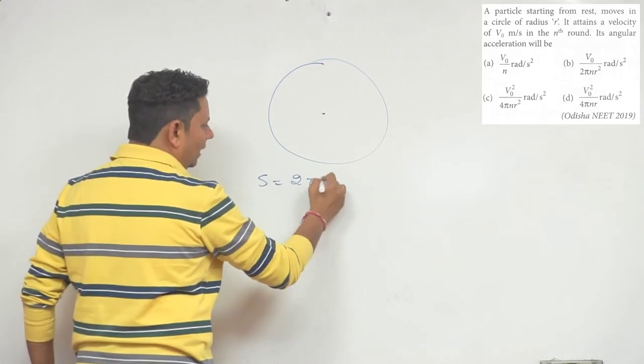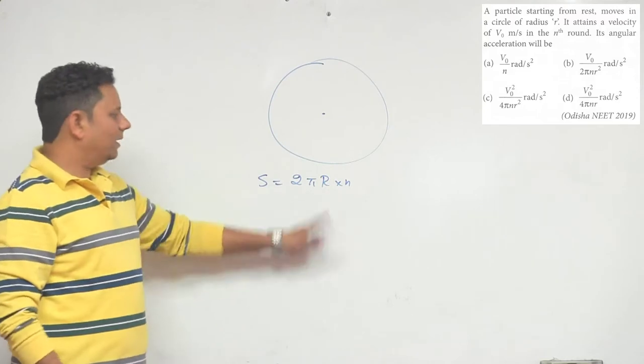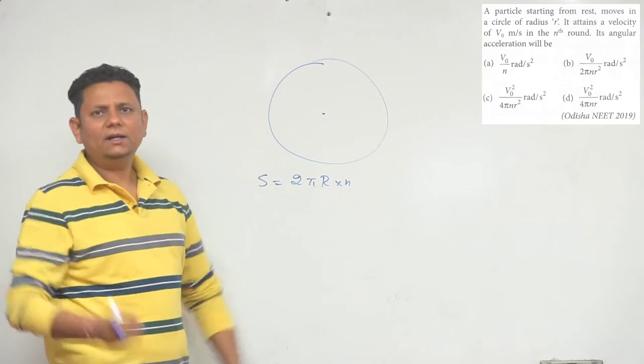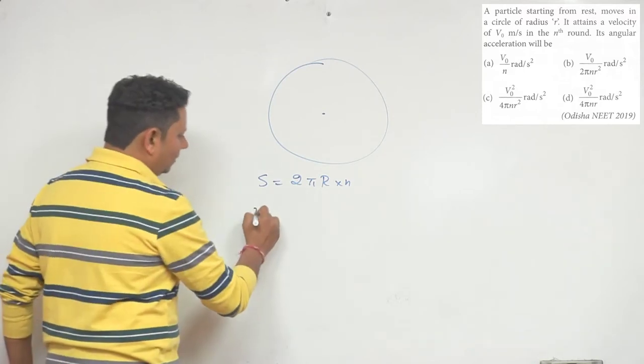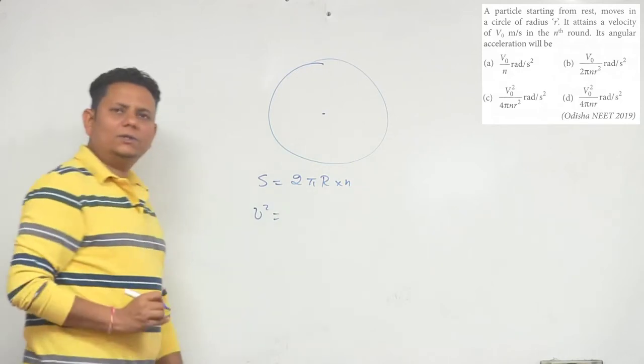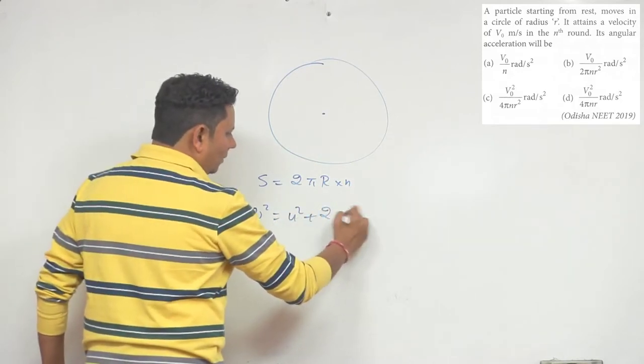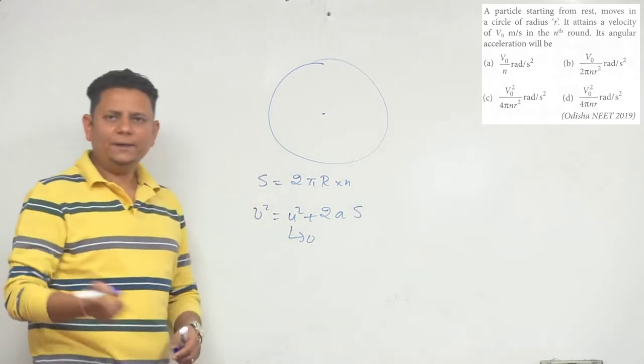For velocity, we use the third formula of motion. We can say v² = u² + 2as. We can use this. Initial velocity u is 0 because the particle starts from rest.